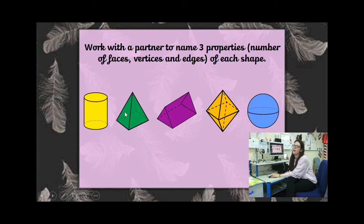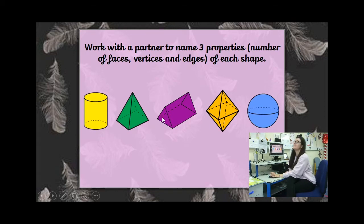This is a square-based pyramid. If it looks like a pyramid, there are different types — this one has a square face on its bottom, so it's a square-based pyramid. Well done! What's this one called, Angel? A triangular prism — good girl, well done!